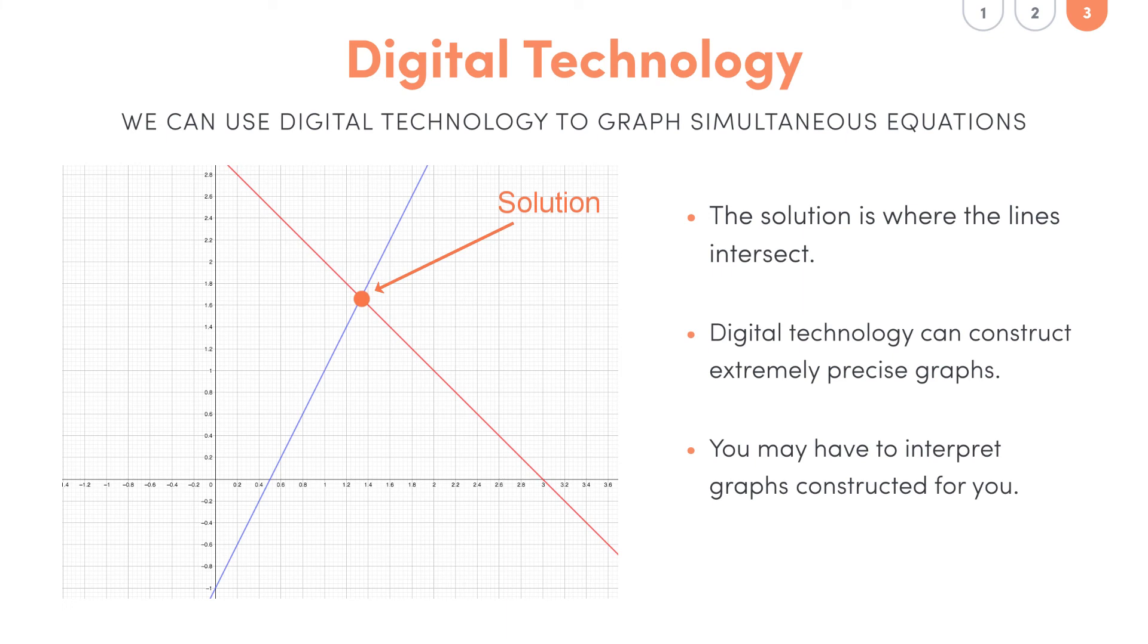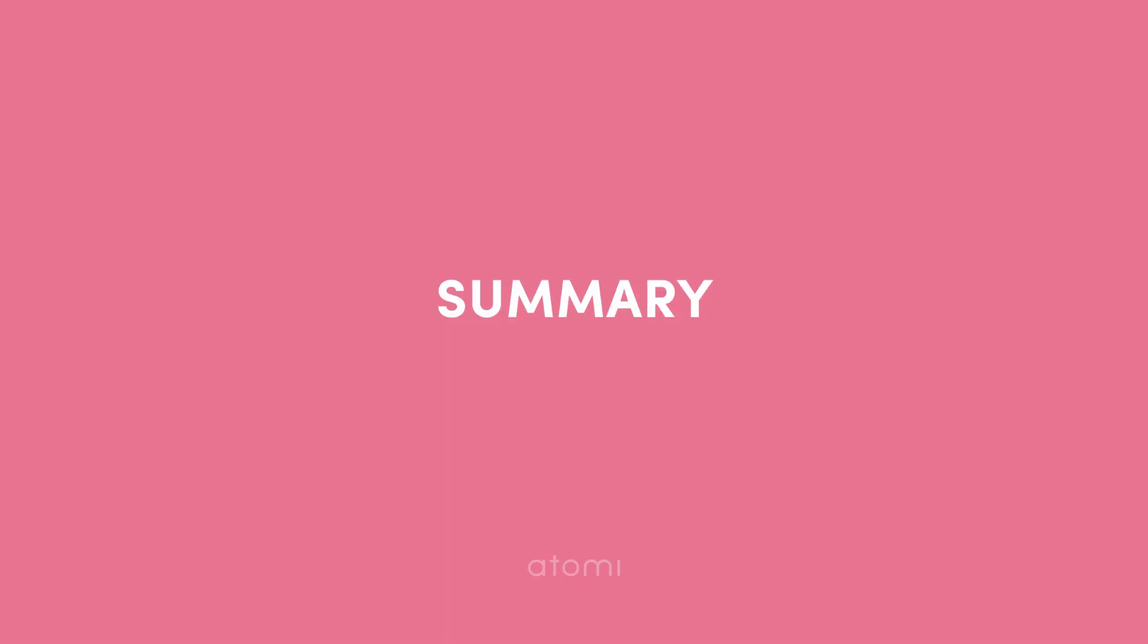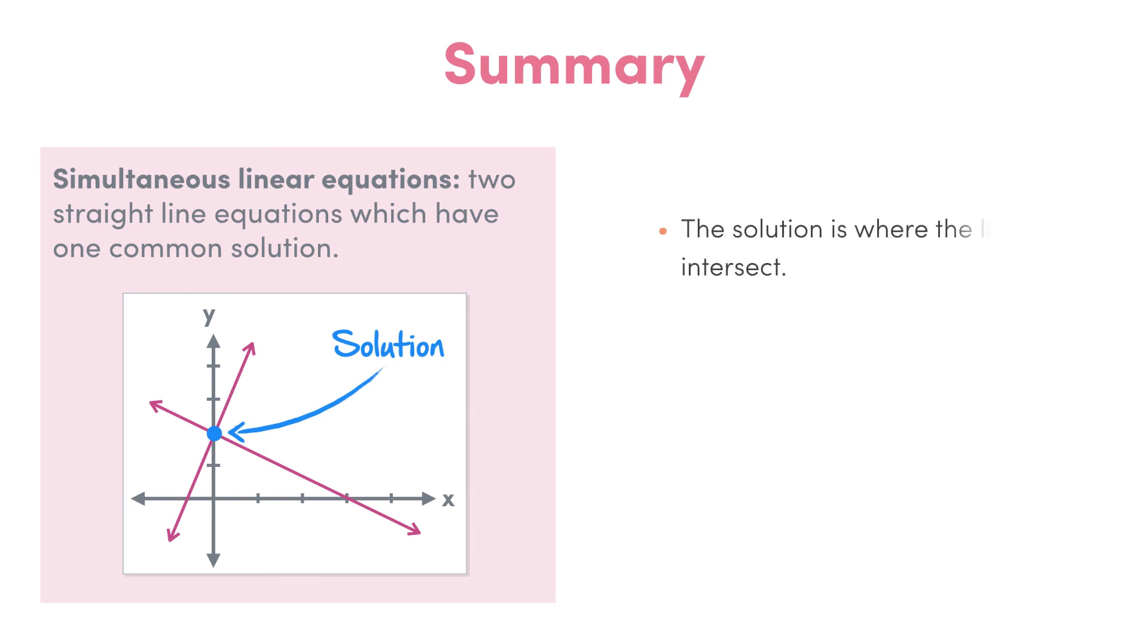All right everyone, that was a nice introduction to simultaneous equations, which is one of the main topics in the year 12 algebra syllabus. So today we saw that simultaneous linear equations are simply two straight line equations which have one common solution. If we were to graph this, it would look like two straight lines intersecting at one point, the common solution. Also, we covered how digital technology can graph simultaneous equations much more accurately than we can draw them, so they can be super useful when we need really precise answers.